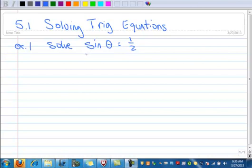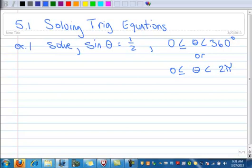A problem like this will say solve sine of theta equals 1 half, where theta is between 0 and 360 degrees, or it might say theta is between 0 and 2π. If it says between 0 and 360, the problem is in degrees. If it says between 0 and 2π, the problem is in radians.